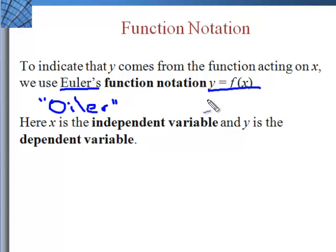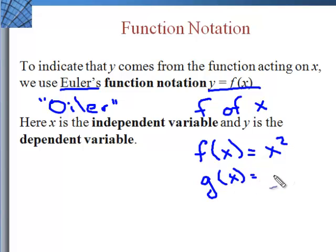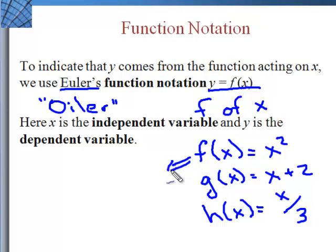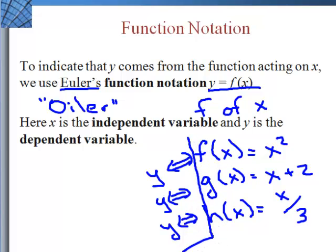And it's pronounced y equals f of x. Now the f is just a designation. It can be f, it can be g, it can be h. Those are the typical ones that are used. And the way you would write it is f of x equals whatever the function is. F of x equals x squared. G of x equals x plus 2. H of x equals x over 3. So this f of x, g of x, these are going to be giving us our y's. So that's what that means. Y equals x squared, y equals x plus 2, y equals h plus 3. But we're going to use the function notation and not have the y in there.